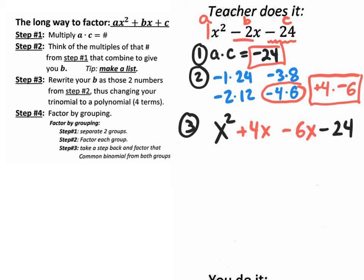So let me reiterate step 3. Step 3 was changing your trinomial to a polynomial. Three terms into four terms. And how do we change the three terms into four terms? We take that b value and we rewrite the b value as the two numbers from step 2.